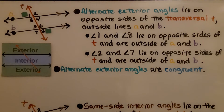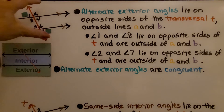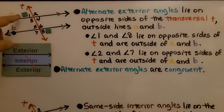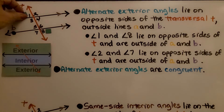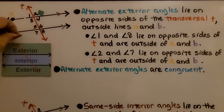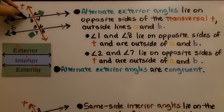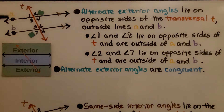Here we have alternate exterior angles. They lie on opposite sides of transversal T outside lines A and B. Angle 1 and angle 8 lie on opposite sides of T and are on the outside of A and B — they're alternate exterior angles. Angle 2 and angle 7 also lie on opposite sides of T and are outside of A and B. Alternate exterior angles are congruent — angle 2 would have the same measure as angle 7.